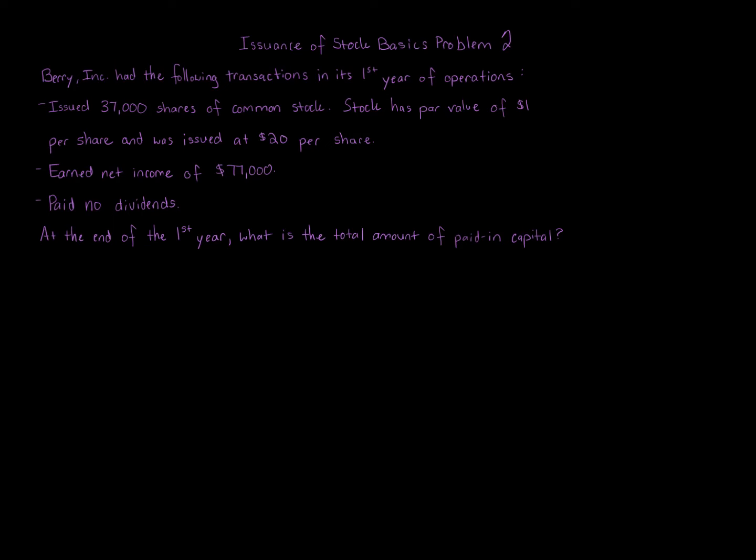Issuance of Stock Basics Problem 2: Barry Inc. had the following transactions in its first year of operations. Issued 37,000 shares of common stock. Stock has a par value of $1 per share and was issued at $20 per share.